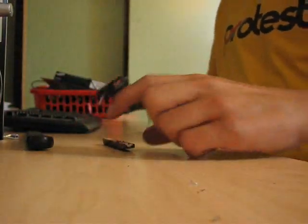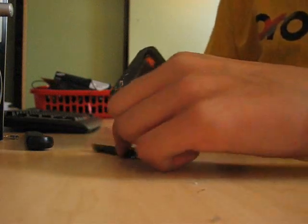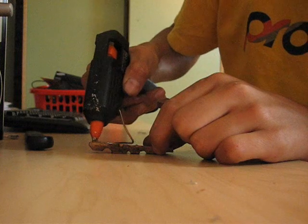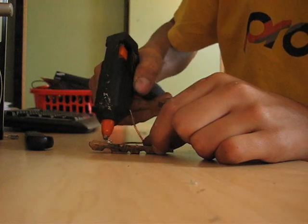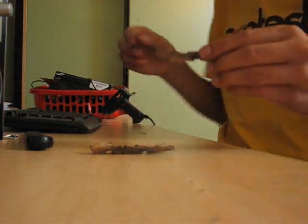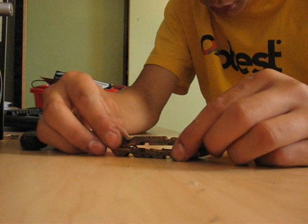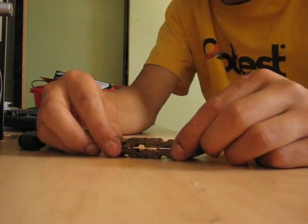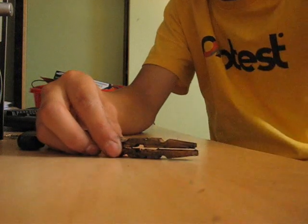The next part is you'll just glue the two parts together. It isn't too hard. Make sure the BB can go through the barrel, so don't make it too tight. Then just wait until it's dry.